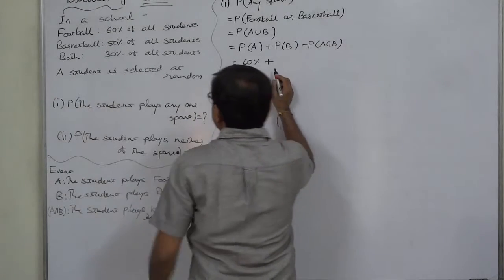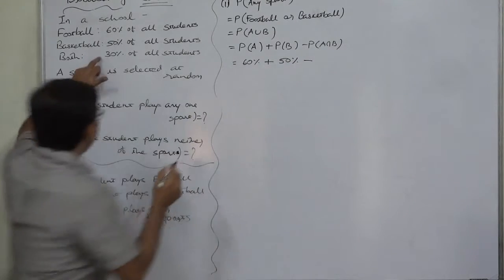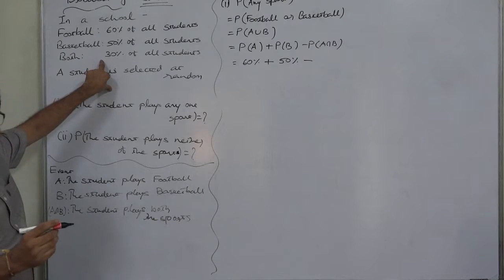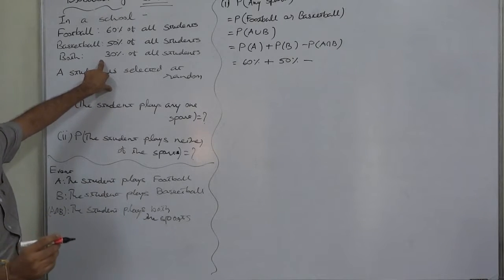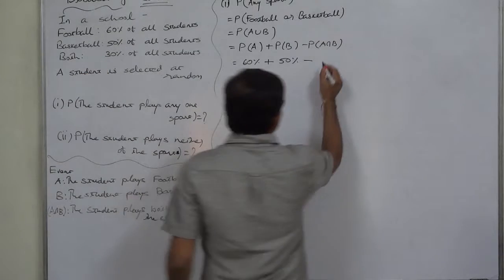The probability is 50%, and 30% of all students play both the sports. So if any student is selected at random, he or she being a player of both sports, the probability comes to 30%.